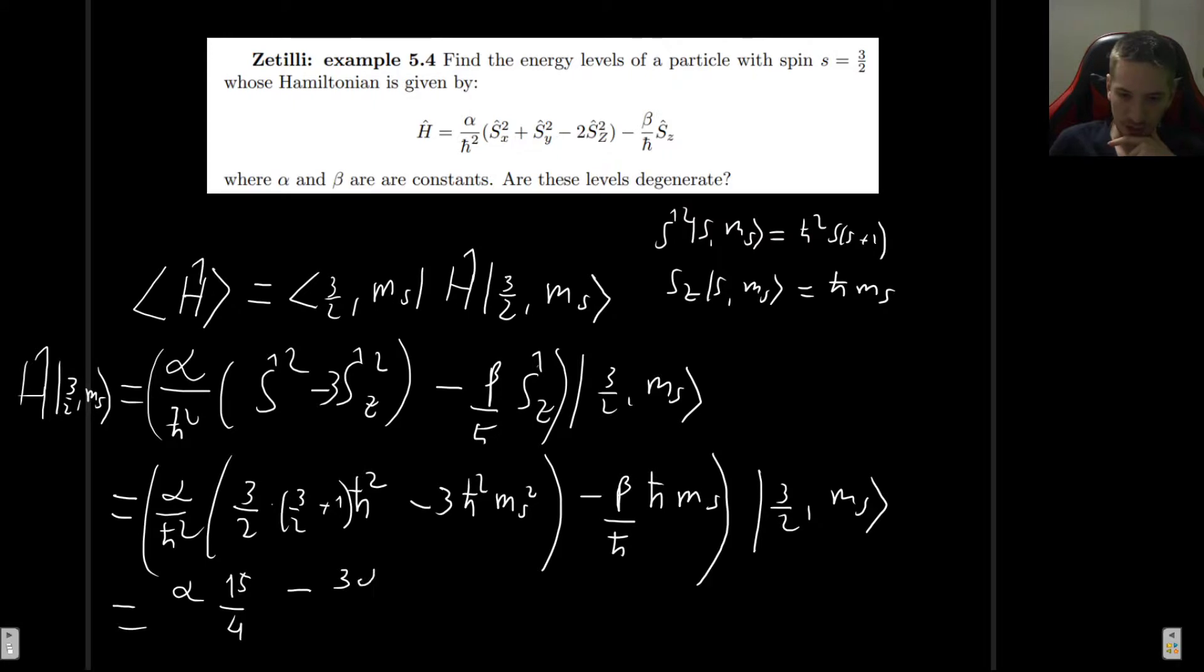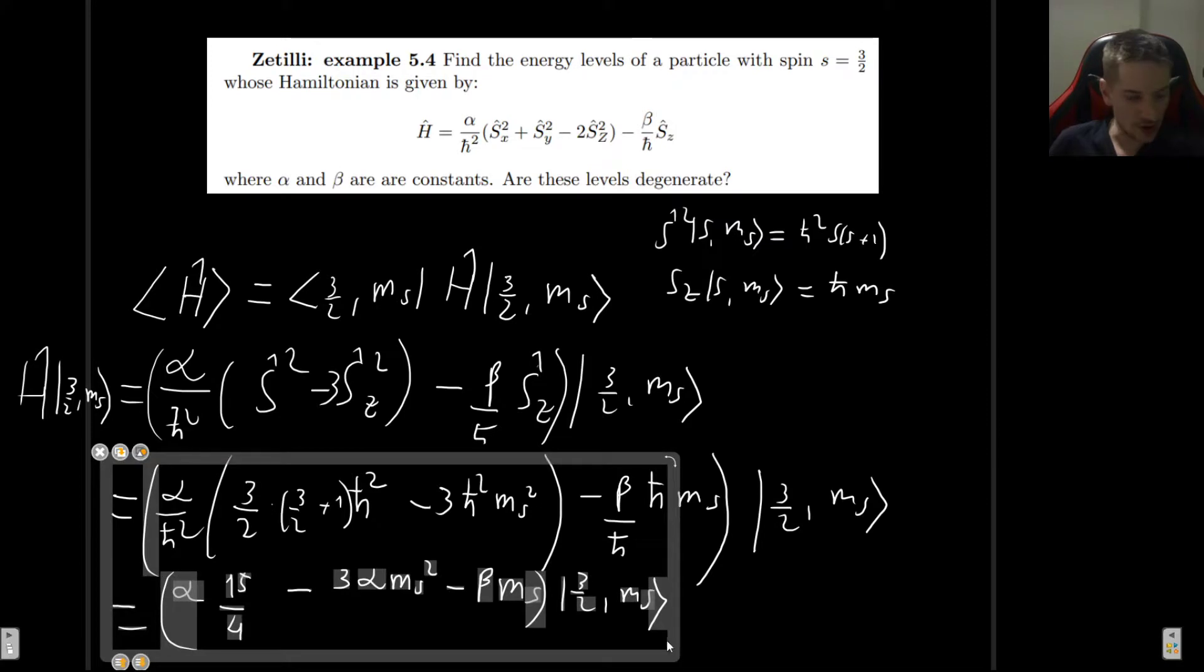Then we have minus 3 alpha m_s squared, and then minus beta m_s, all of this acting on 3/2, m_s. So this is the effect of the Hamiltonian operator acting on some ket.